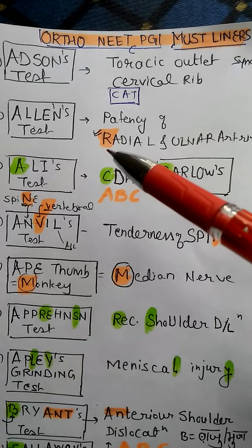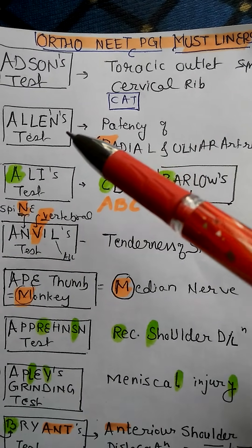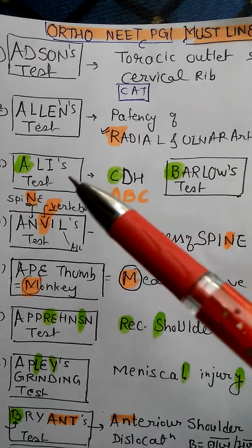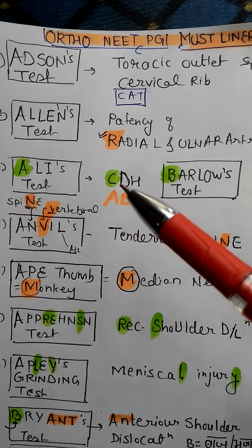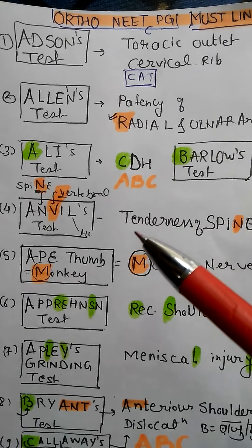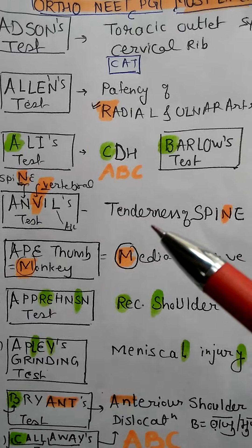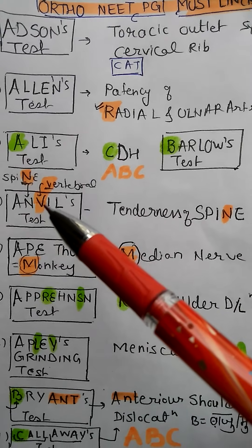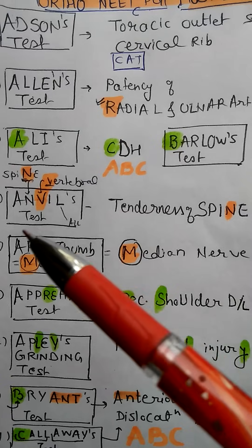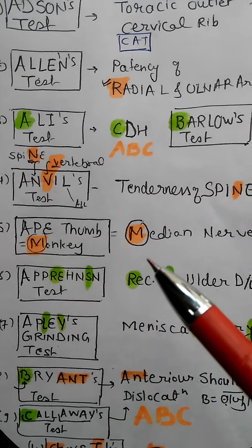So Rajasthan gives RA, and LN gives LE — Allen's. Barlow's test is used for CDH — A, B, C — this becomes ABC. Naffziger's test is for tenderness of the spine. How I remember this: V for vertebral column, which is related to spine, and N is also present here.